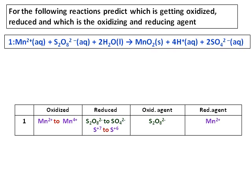Based on this, you can see that Mn2+ is oxidized to Mn4+ and S+7 is reduced to S+6. And therefore, the one which gets oxidized is a reducing agent. Therefore, Mn2+ is a reducing agent and S2O32- is the oxidizing agent.